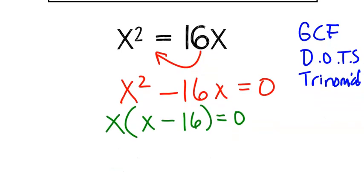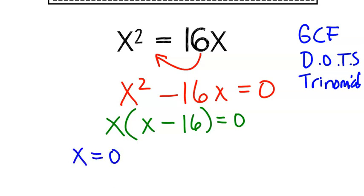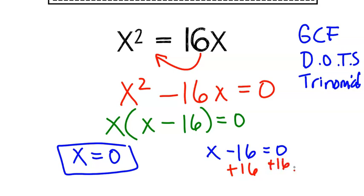Now, what I'm going to do is split my two factors. Either the first factor is 0 or the second factor is 0. So that means my answers are 0 or positive 16.